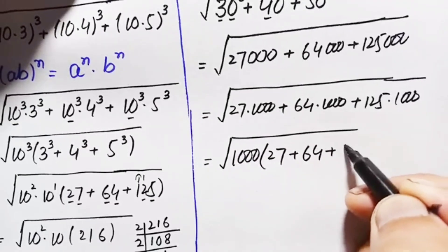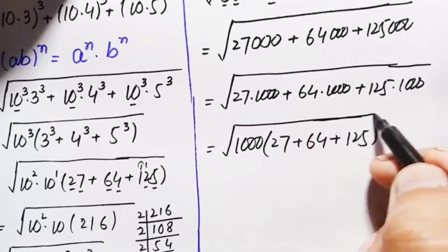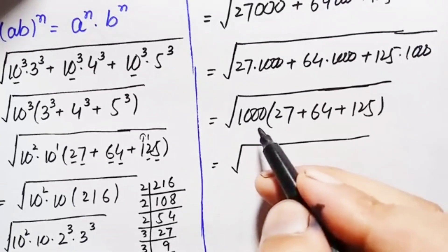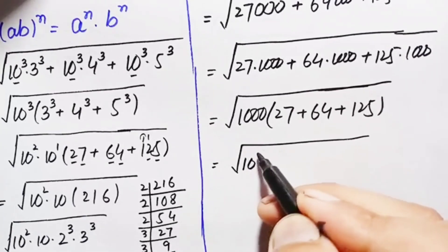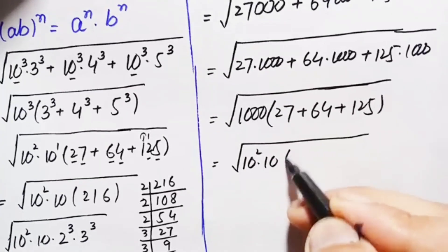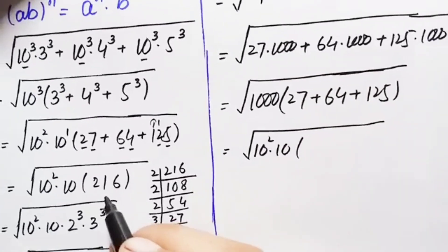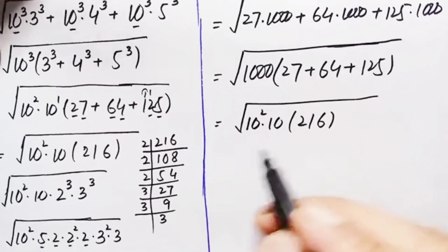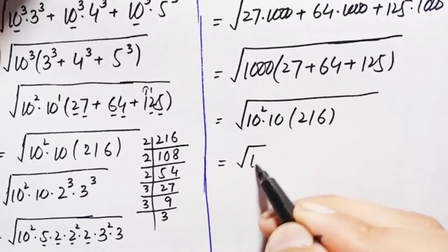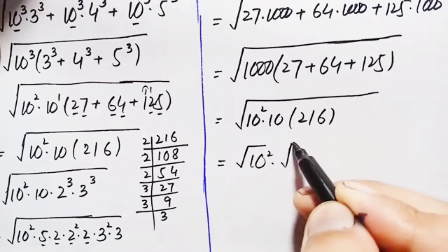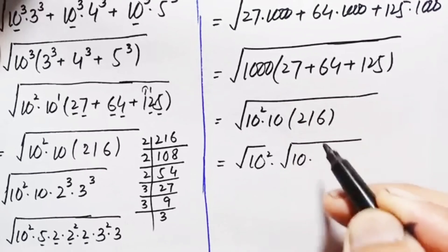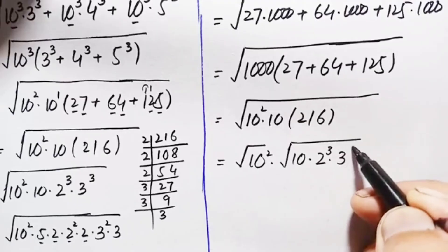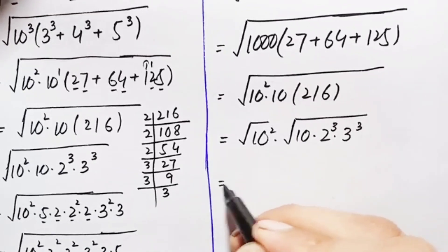We write 1000 as 100 times 10, and 100 is the same as 10 squared. Adding the numbers in the bracket: 27 + 64 + 125 = 216. We already know 216 = 2 cubed times 3 cubed. Using the radical math property, we separate the square root of 10 squared times the square root of 10 times 216.